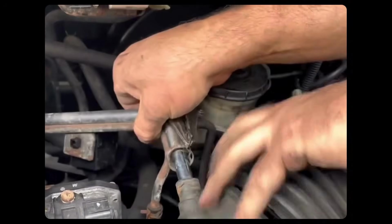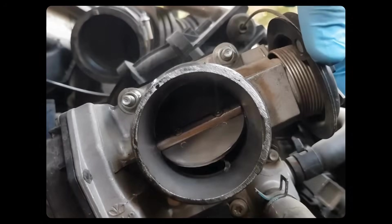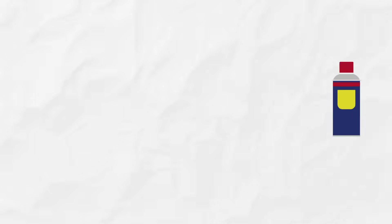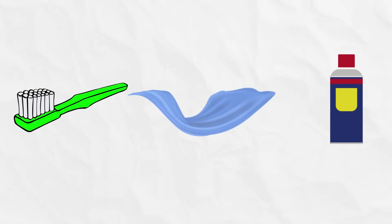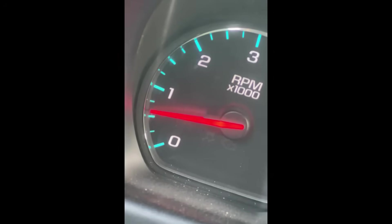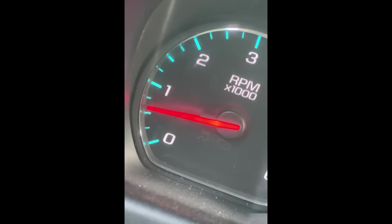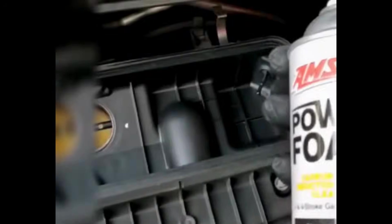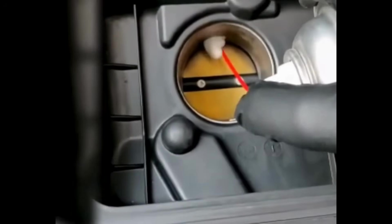To access the throttle body, you'll need to remove the air intake duct. You can clean the throttle body using an old toothbrush, a sturdy blue paper towel, and brake cleaner to remove any gunk or grime. One user reported an issue with their 2018 GMC Sierra Denali experiencing RPM fluctuations while idling or stopped in gear — he cleaned the throttle body with AC Delco Foam and the issue was resolved.